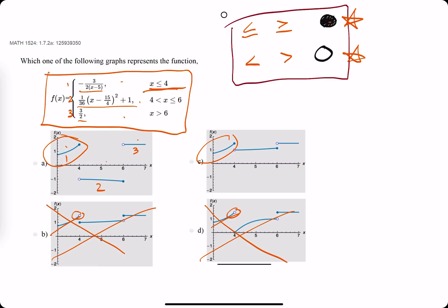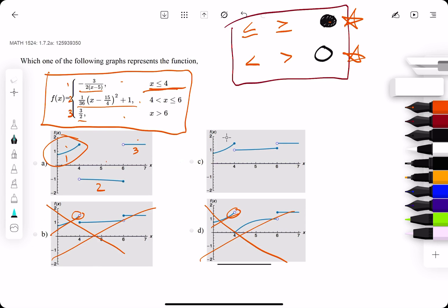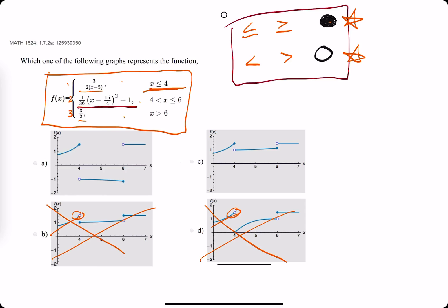So then we're looking at a or c. What we need to consider next is the middle function here. So 1 over 36 and then the rest.